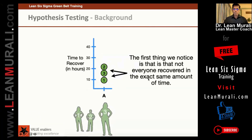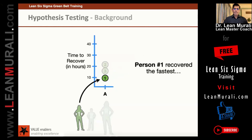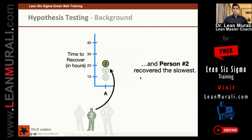So what is the first thing we notice? To recover from this virus, not everyone recovers at the same time. Person 1 recovered the fastest, while person 2 recovered the slowest — person 2 took around 20 hours plus, and person 1 took about 10 hours plus.